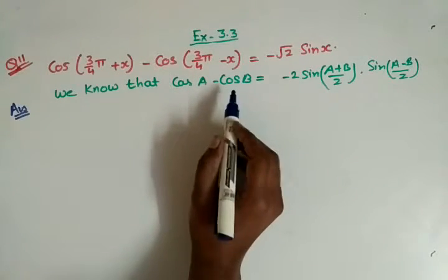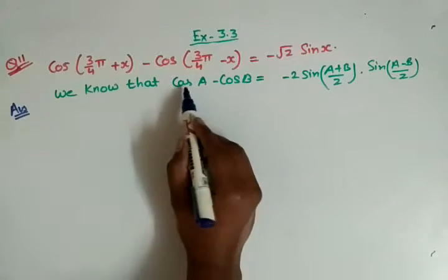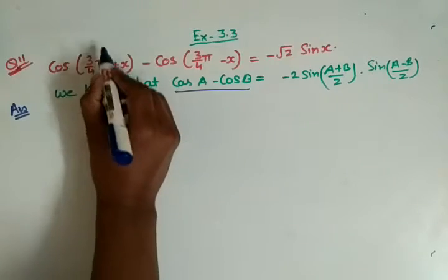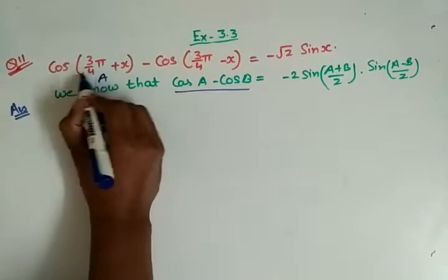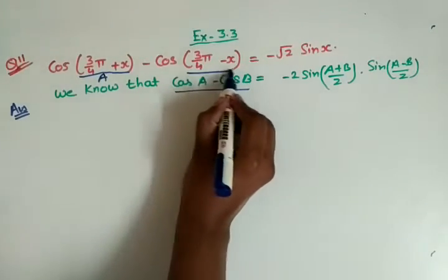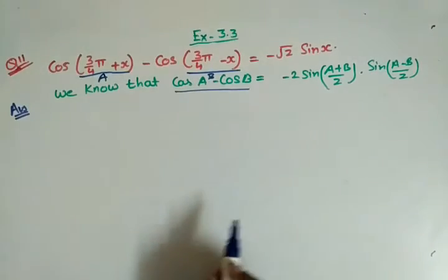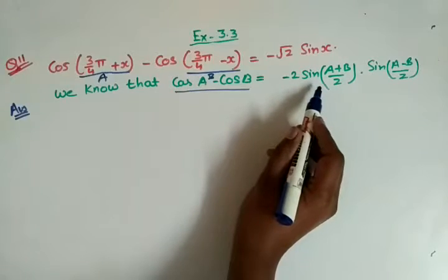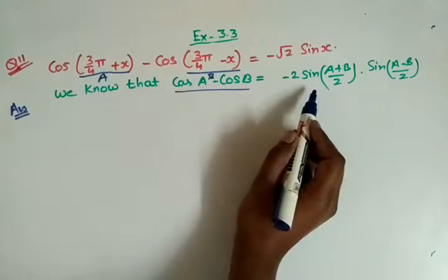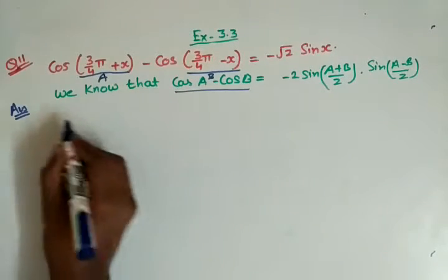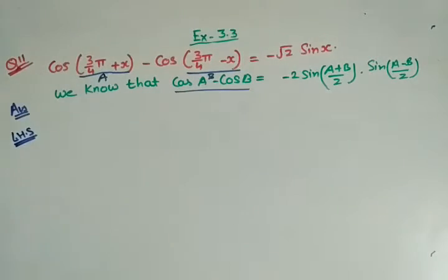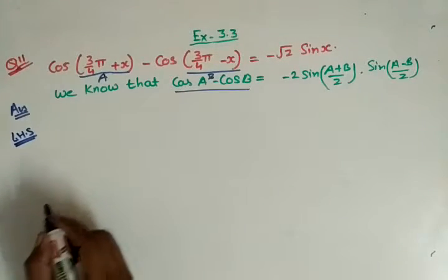First of all, we have to refer to the cosA - cosB identity. We take this as A and this theta as B, so we will use the identity cosA - cosB which is equal to -2 sin((A+B)/2) · sin((A-B)/2). I will take the left hand side and we will use this identity.